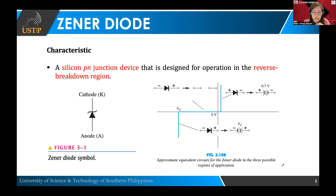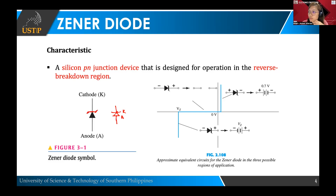This is our Zener diode symbol. If you can remember our standard diode, the symbol is something like this — this is your cathode, this is your anode. But for our Zener diode, it has a little bent line added to our standard diode symbol. It's easier to remember because this symbol creates somewhat a letter Z. So it's the same connections — the triangle or arrow part is the anode, and this part is the cathode.